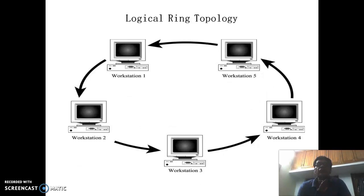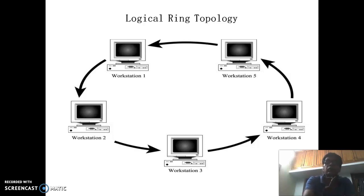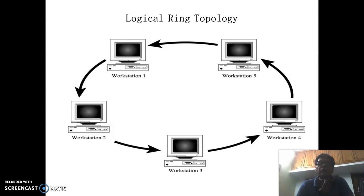This is the diagram of ring topology, where computers are connected in a ring formation. The diagram looks like a ring, which is why it is called ring topology. It can also be connected in a straight line or square formation. The main disadvantage of ring topology is that if any connection disconnects, the whole network will stop working.